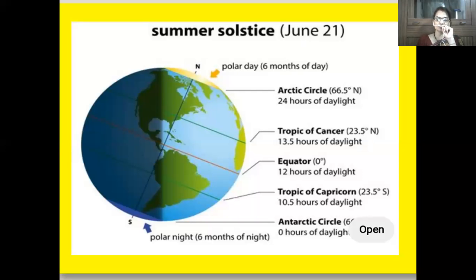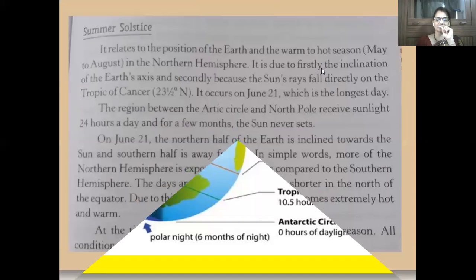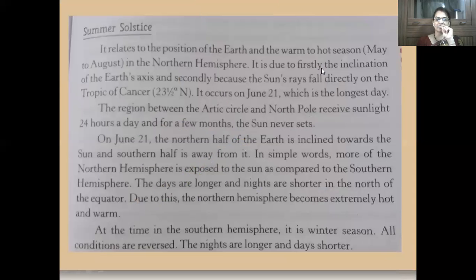In June, the length of day at 90 degrees north is 24 hours. At the equator it is 12 hours, and at 90 degrees south it is dark. This was about the summer solstice.